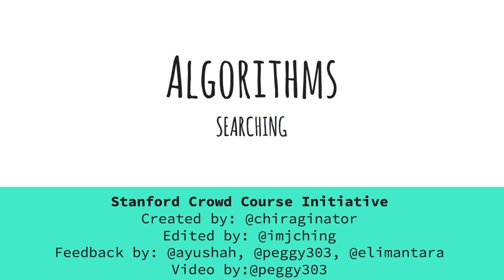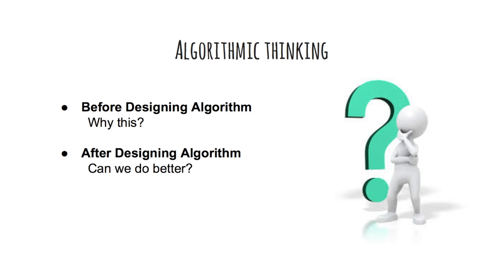Hello everyone. Welcome to the course on algorithms. This course is created by Stanford CrowdCourse initiative. Get excited because there are a lot of interesting bits of knowledge coming your way. In this video we will cover the essentials of the basic searching algorithms. Algorithmic thinking has two important phases. Before designing the algorithm we need to analyze the problem that we want to solve and identify the approach we are going to follow to solve it. After designing the algorithm, the solution needs to be analyzed and improved upon if necessary.